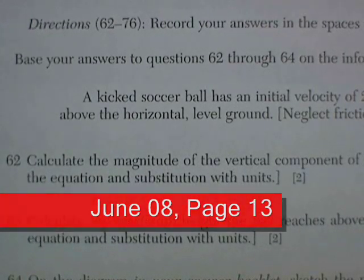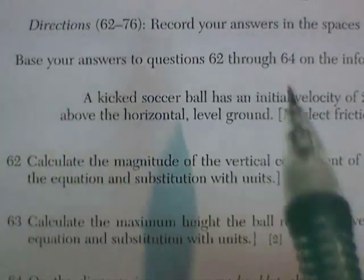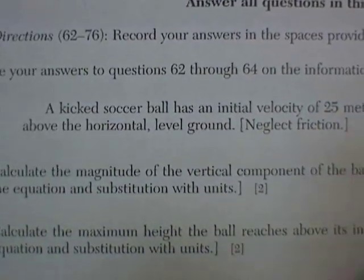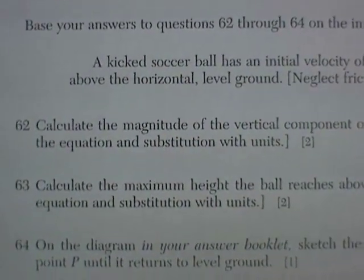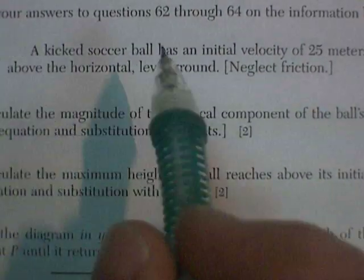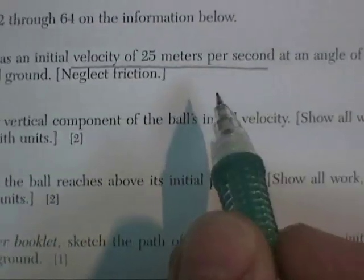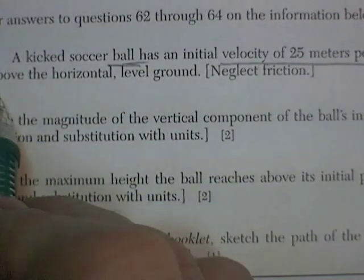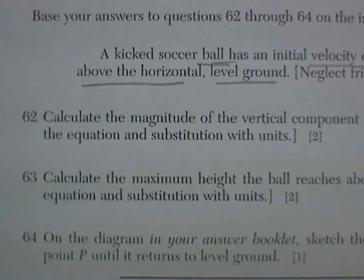We are on the June Audit exam, page 13 of the top half. Directions for questions 62 through 76. Record your answers on the spaces on the answer sheet. Base 62 through 64 on the following information. A kicked soccer ball has an initial velocity of 25 meters per second and it's flying at an angle of 40 degrees above the horizontal level ground. Neglect air friction.